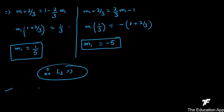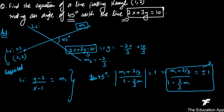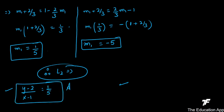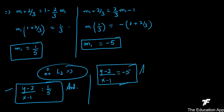Therefore, the two answers are: (y - 2)/(x - 1) = 1/5 and (y - 2)/(x - 1) = -5. Both are valid equations of the required line. This question is now clear to everyone, so let us move on to the next question.